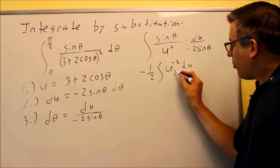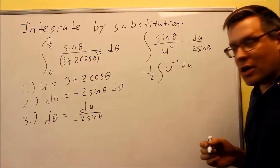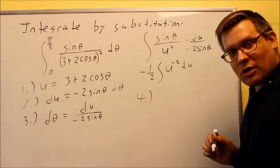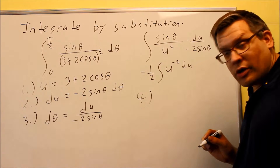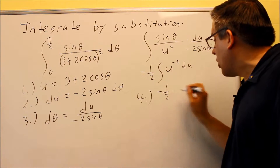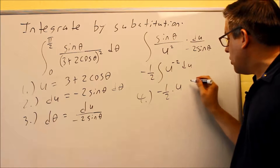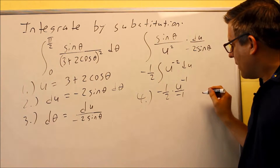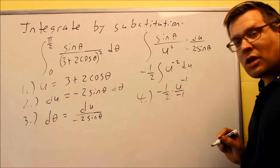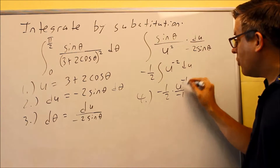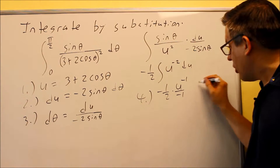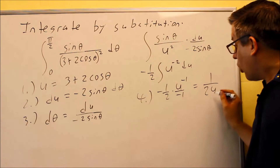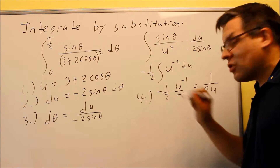That leaves you with u to the negative 2 du. It's written in that format to make it easier to take the antiderivative. Step number 4 is where we take the antiderivative using the inverse power rule. You have negative one-half — raise the power by 1, divide by the new power, then simplify. The two negatives cancel out, and since you have u to the negative 1, you can write that as 1 over 2u, and it's positive again.